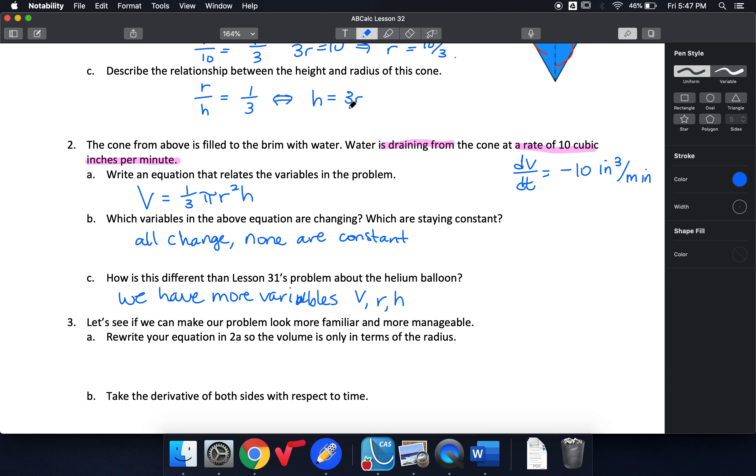But we have an equation that connects our height and our radius. So I can rewrite this equation using only two variables, which is helpful because then it's easier to take the derivative. So I can say that volume is one-third pi r squared, and instead of h I'm going to write 3r. This is lovely because my threes cancel. So I get pi r cubed.